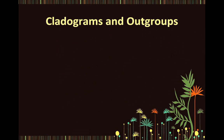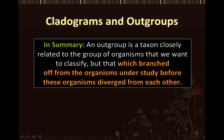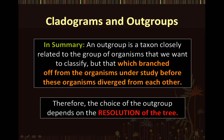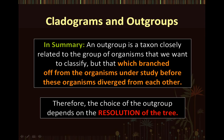In summary, an out-group is the taxon closely related to the taxa under study, but which branched off from the organisms before these diverged from each other. The choice of the out-group depends on the resolution of the tree — in other words, the amount of detail you want to look at and the organisms you want to include. A different out-group can be chosen for each cladogram depending on the taxa being studied and compared. This concept will be further elaborated on in later lectures.